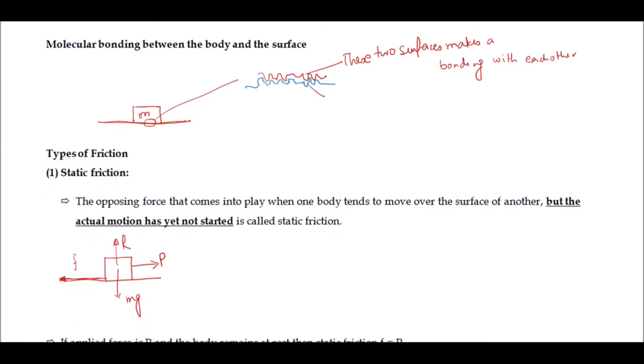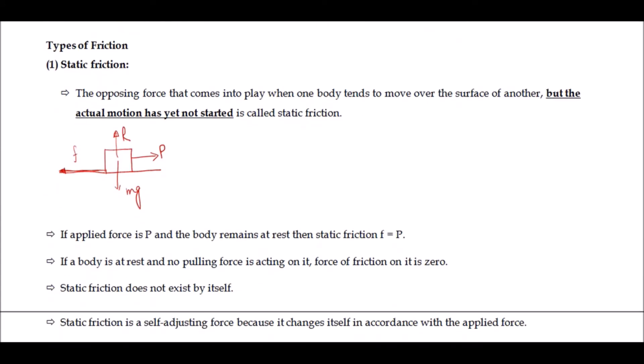Now, what are the different types of friction? The first type is static friction. A frictional force which is developed when the object actually does not move is called static friction. The opposing force that comes into play when one body tends to move over the surface of another but actual motion has not yet started is called static friction.